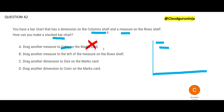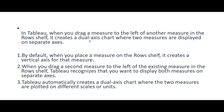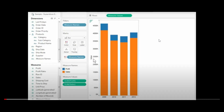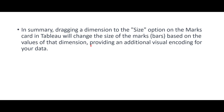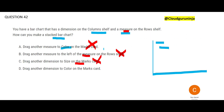Option B says you drag a measure to the left of the measure in the row shelf. The row shelf already has a measure and you want to drag one more. If you do that, it will create a dual axis chart where two measures are displayed on separate axes — this will not create a stacked bar chart. Option C says you drag another dimension to the size on the marks card. If you put it on size, the size of the bar changes based on the dimension for visual encoding — this will also not create a stacked bar.